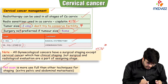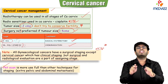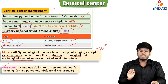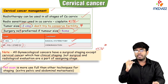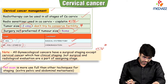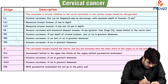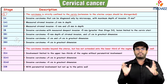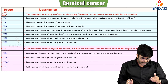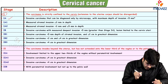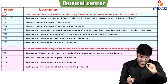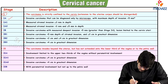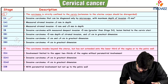If stage is 1 to 2a1, radical hysterectomy can be done. If stage is 1b3 to stage 4, chemo-radiation is done. Now let's see the staging in detail. Stage 1: cancer is strictly confined to the cervix. Substage 1a: cancer is so small it can only be diagnosed by microscopy, with depth of invasion less than 5 millimeters.